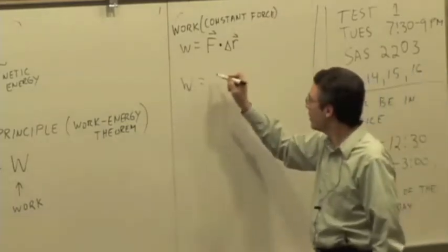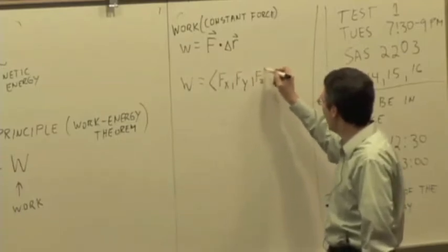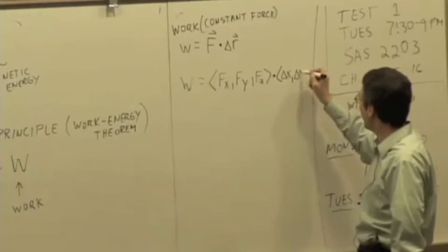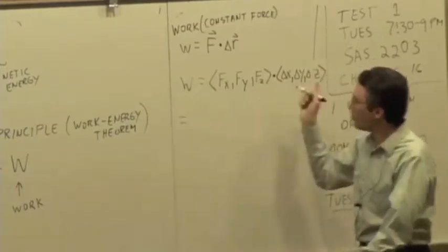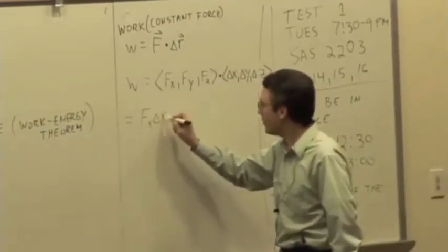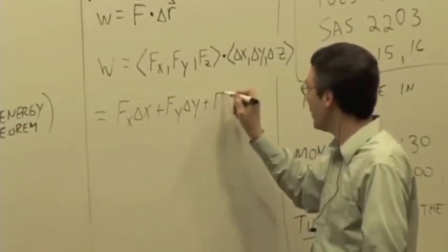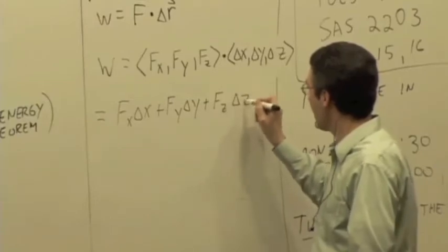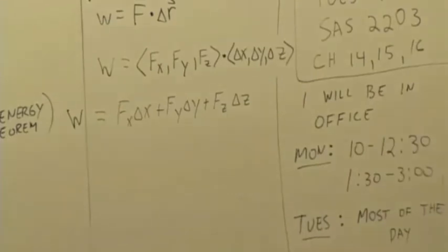What is a dot product? So I have F_x, F_y, F_z dotted with delta X, delta Y, delta Z. If I do the dot product, F_x delta X plus F_y delta Y plus F_z delta Z. And it's a scalar, not a vector. It just gives you a positive or negative number. And energy is a scalar too, just a number.